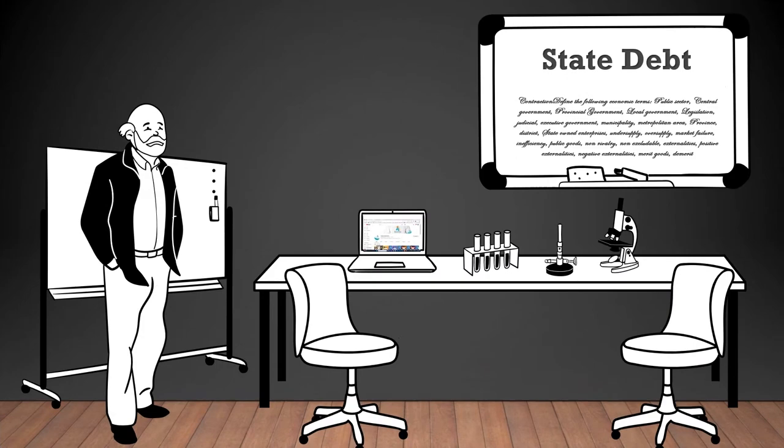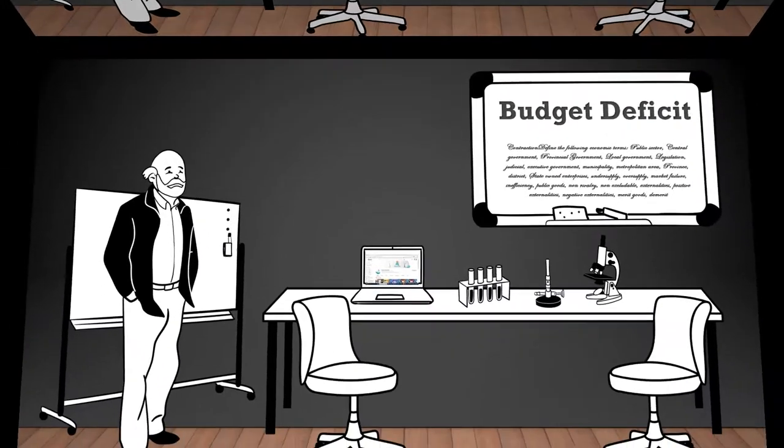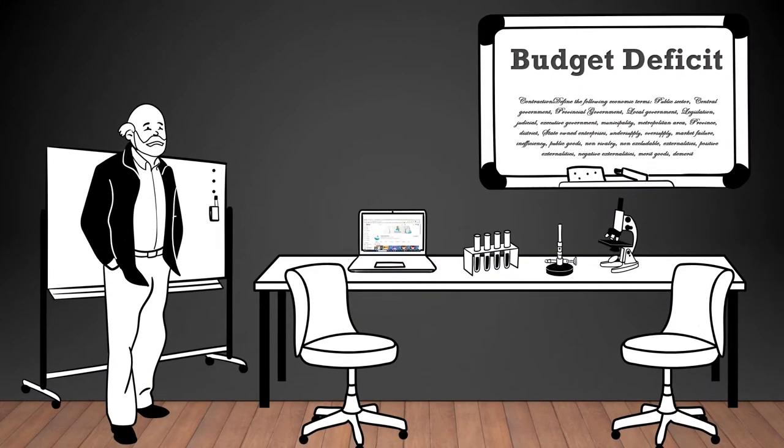State debt: the total amount of debt owed by a government. Budget deficit: the situation where government expenditures exceed government revenues in a specific period, leading to a negative budget balance.